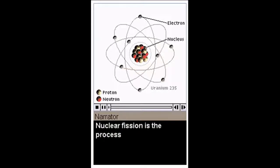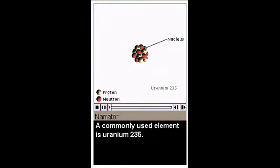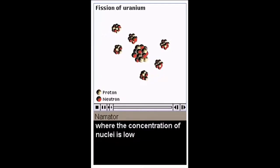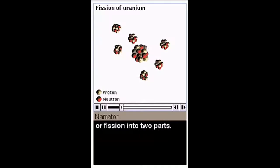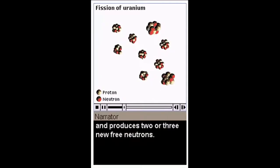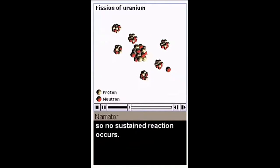Nuclear fission is the process in which atoms of certain elements split, producing heat. A commonly used element is uranium-235. The nucleus of the uranium-235 atom contains 235 particles called protons and neutrons. In naturally occurring samples of uranium, where the concentration of nuclei is low, free neutrons move about, passing through or colliding with the nuclei without effect. Occasionally, a neutron causes a nucleus to split, or fission, into two parts. This event releases energy and produces two or three new free neutrons. However, the free neutrons are quickly lost, so no sustained reaction occurs.